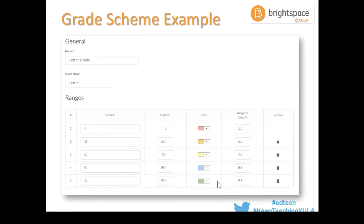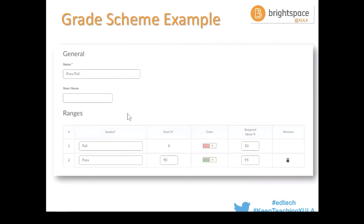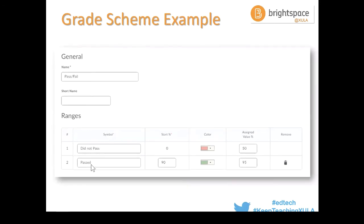In this example I'm creating a letter grade scheme where the symbol goes from A through F: an A is 90 or above, B is between 80 and 90, C and so forth, and you can assign colors to these as well. You could also have a scheme with symbols like Pass or Fail — for example, passing is 90 or above and anything below is Fail. The symbol can be whatever you want to type in, so you could say 'You passed' or 'You did not pass.'